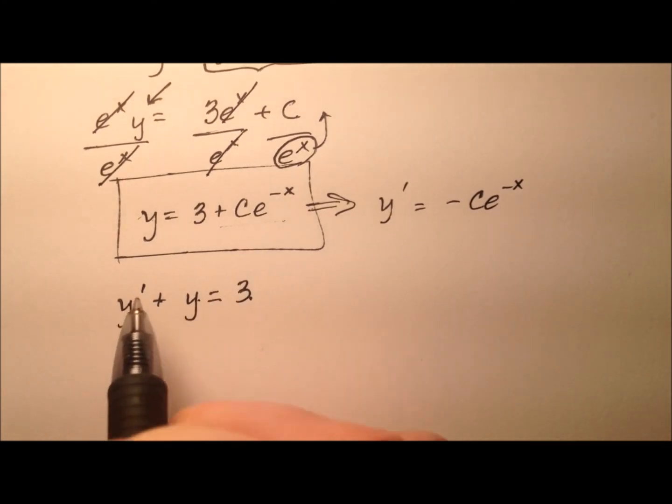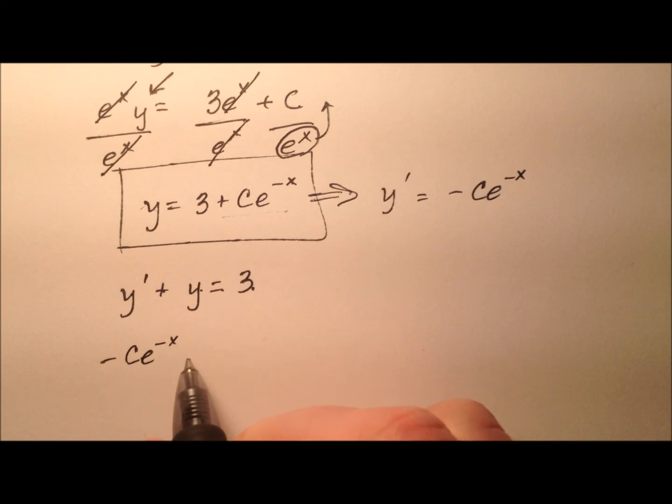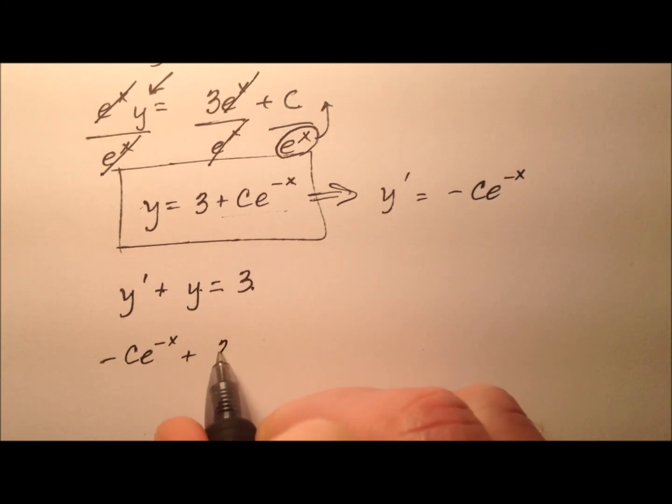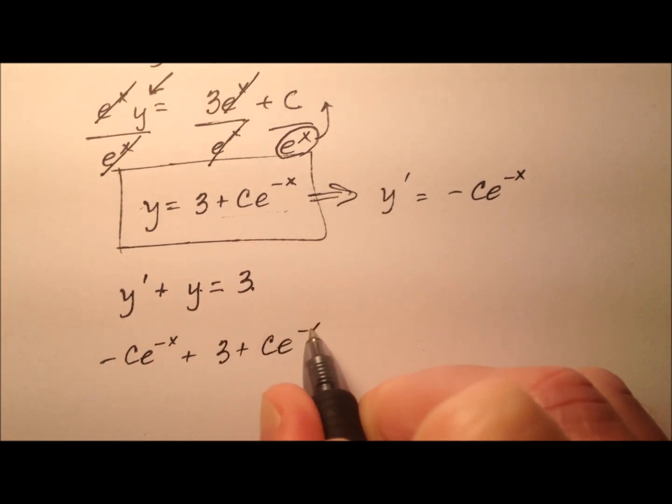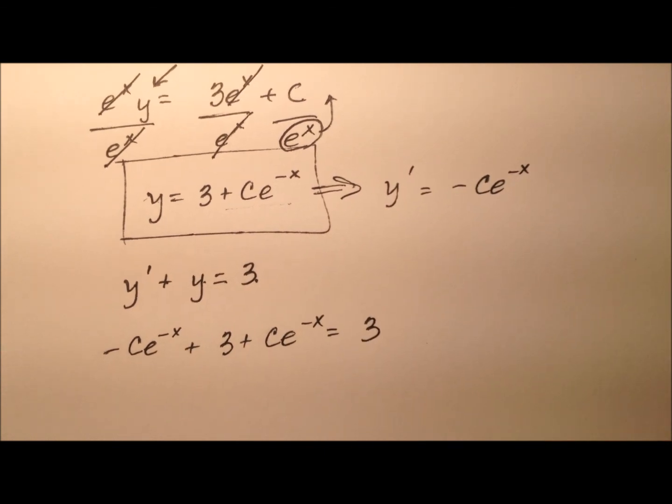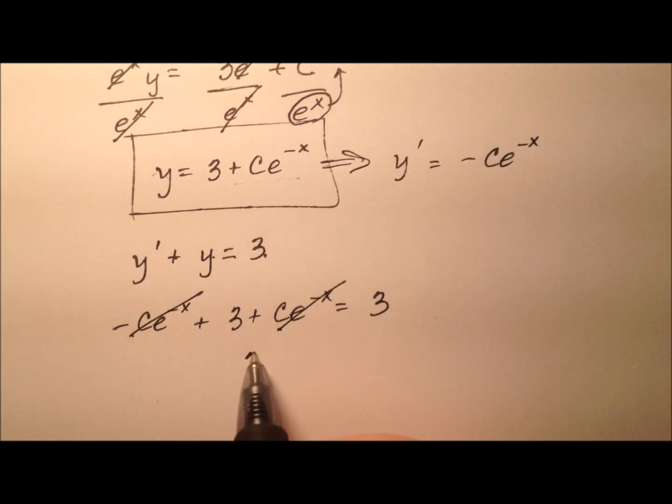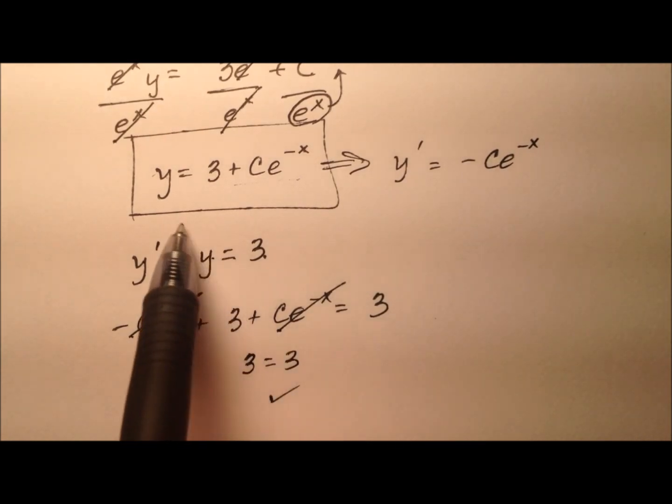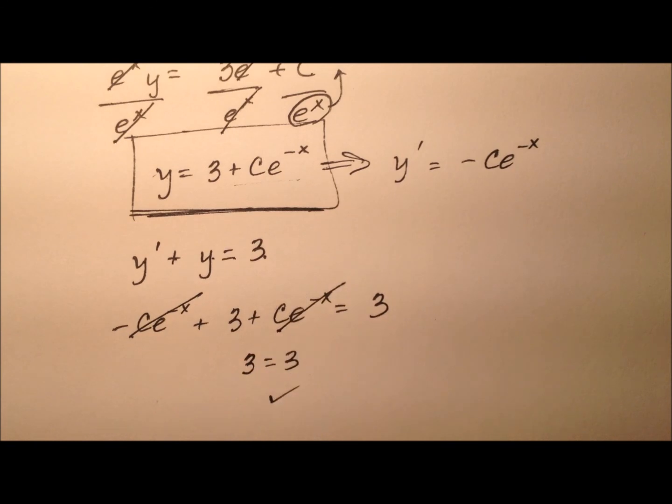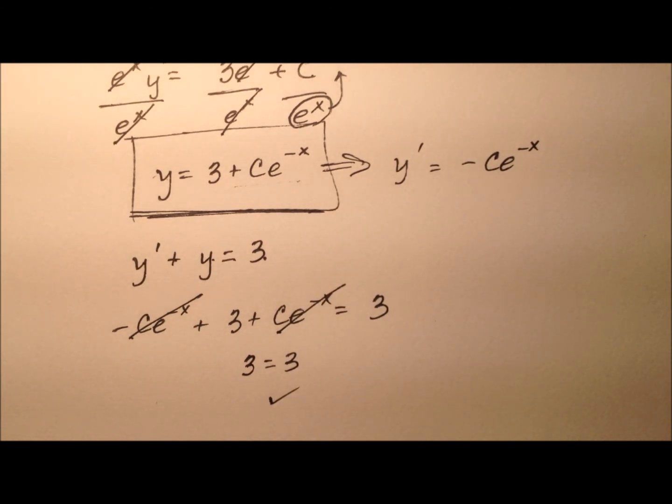I'm going to take y prime which is negative ce to the negative x and add y which is 3 plus ce to the negative x, and I should get 3. These two terms cancel and I get 3 equals 3. So that works out. We have the solution to our original first order linear differential equation.